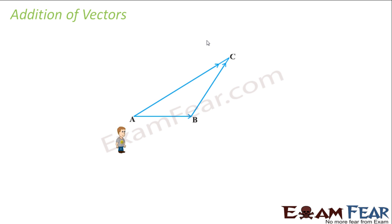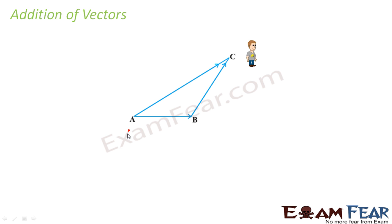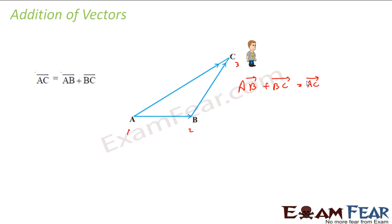Suppose there's a guy who moves from A to B and then from B to C. The total distance he travelled was AB plus BC, but with respect to point A, he moved only the distance AC. The displacement of the guy is AC only, so we will be more interested in the displacement. To find AC, we use vectors — vector AB plus vector BC gives vector AC. This is known as the triangle law of vector addition.